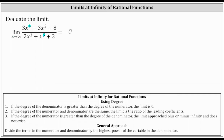The second method we'll take to find this limit is the more algebraic approach of dividing the terms in the numerator and denominator by the highest power of the variable in the denominator. Notice the highest power of the variable in the denominator is x to the fifth. We will now divide each term in the numerator and denominator by x to the fifth.